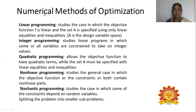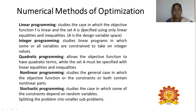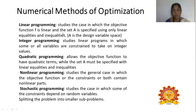The second type is the numerical method of optimization. The first numerical method is linear programming, in which the objective function F is a linear part and the set A is specified using only linear equalities and inequalities. The set A is referred to as the design space — when designing any equipment or experiment (DOE), we set a design variable space.